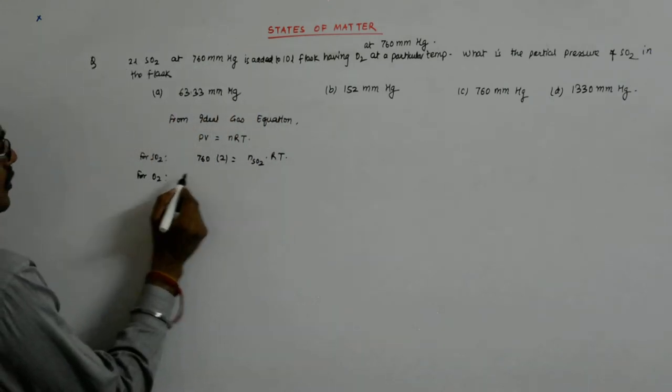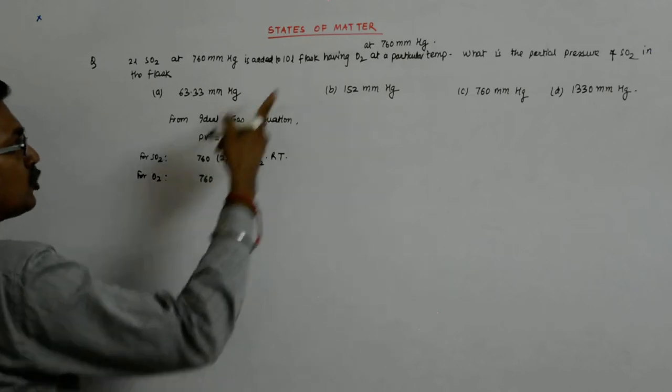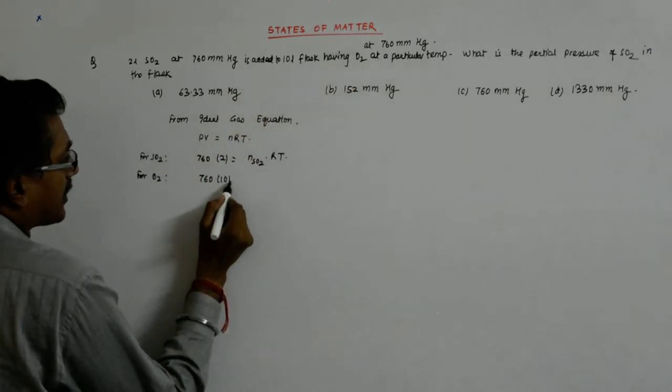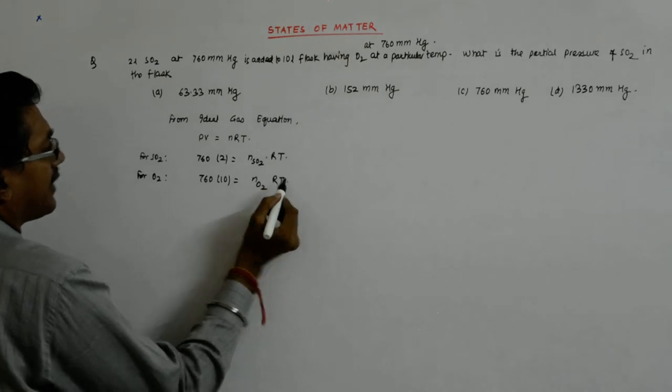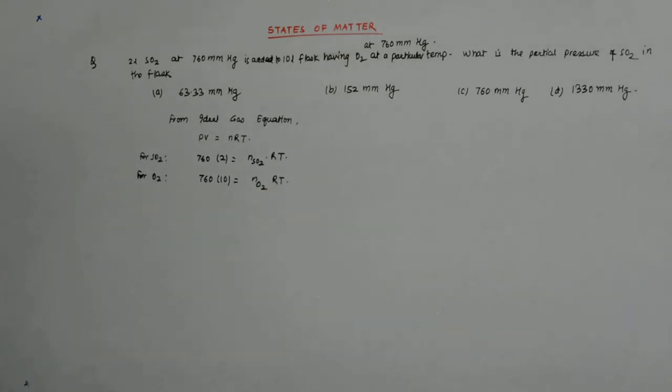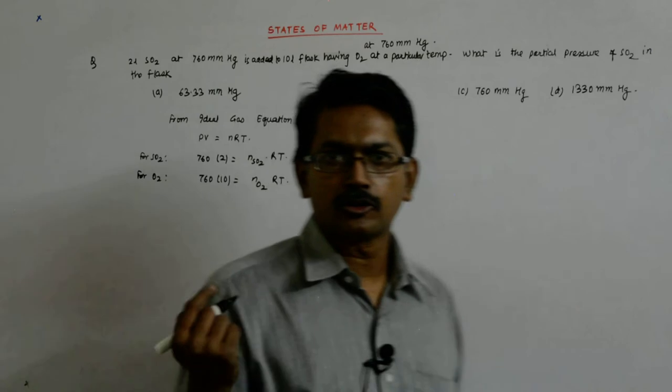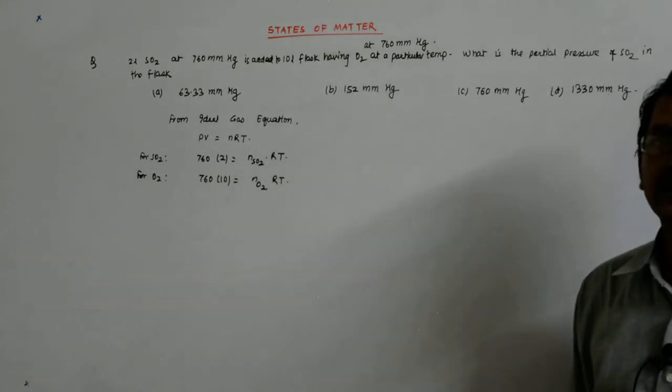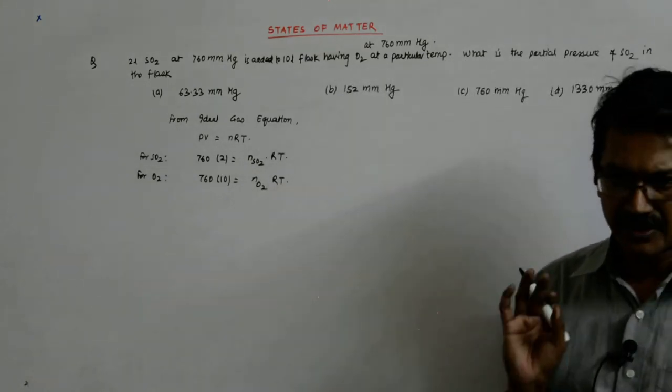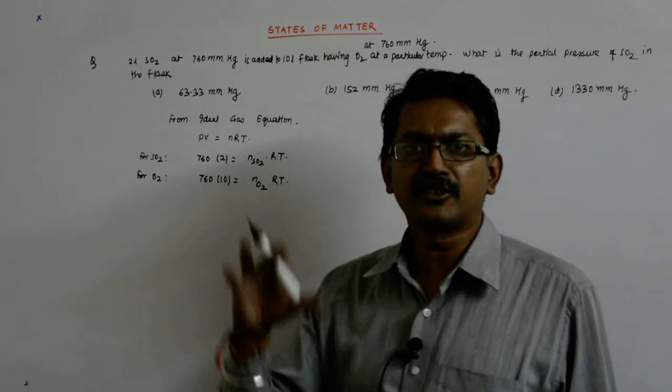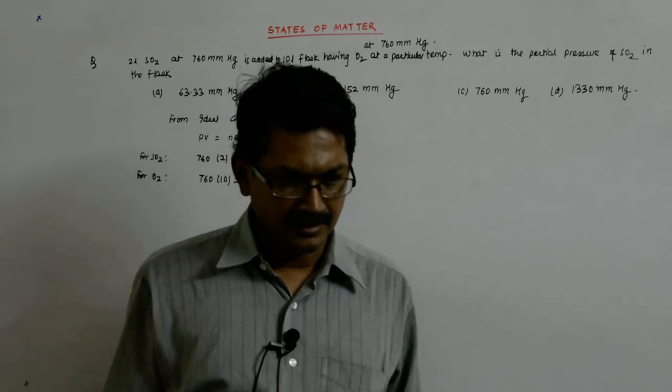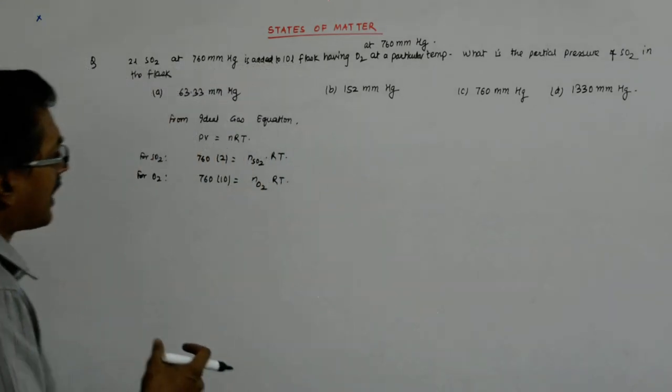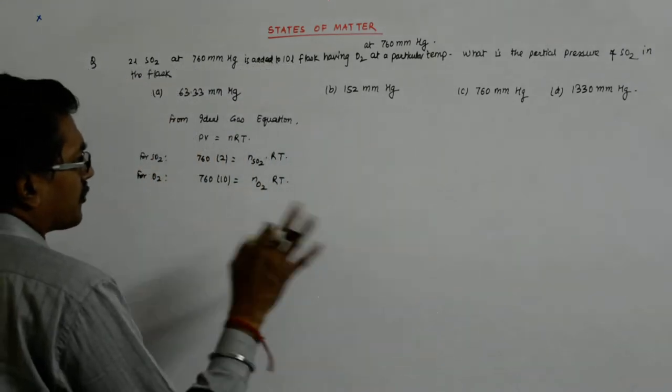For O2, I have assumed that the pressure is 760 into 10 N of O2 RT. I do not know T yet and I also assume that after transferring, it's an isothermal case. So the temperature remains the same because otherwise what happens if you pump in gas into some system, suddenly the temperature goes up. But I assume that sufficient time has been allowed for it to cool down.